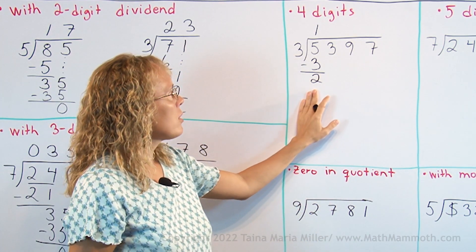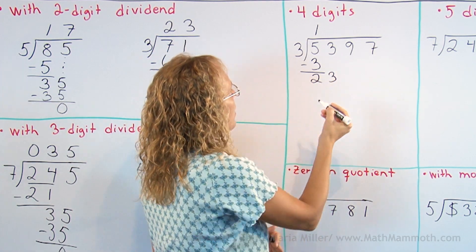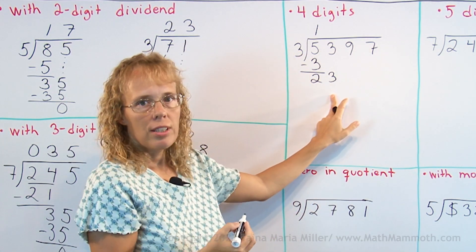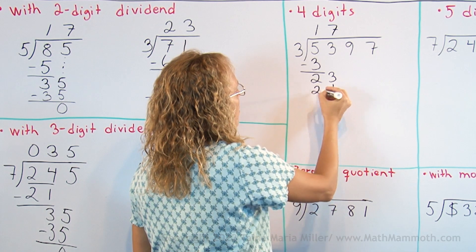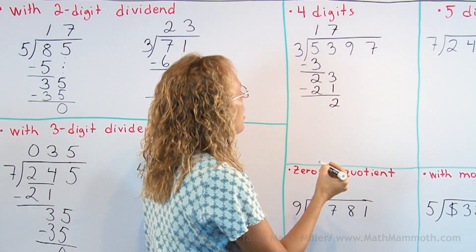The remainder is 2 thousands and then we add to it the three hundreds. 3 goes to 23, 7 times. 7 times 3, 21, subtract. The remainder is 2 hundreds.